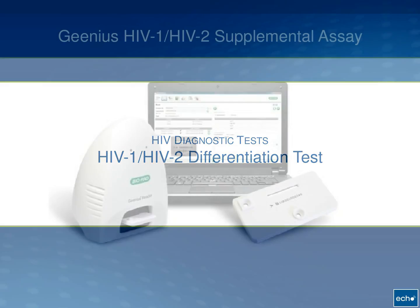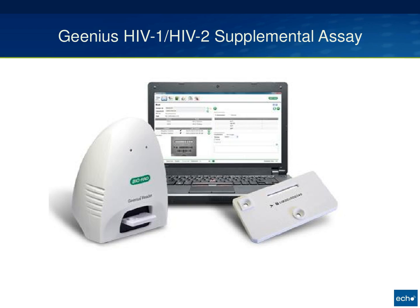The HIV-1/HIV-2 differentiation test now used in most laboratories is called the Genius test. The same company that makes the Genius also makes the multi-spot, and has replaced the multi-spot with the Genius. In some places the multi-spot may still be in use if they had back-ordered or stockpiled it, but in general all new orders and most laboratories have converted over to the Genius.